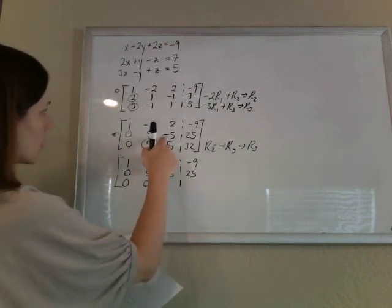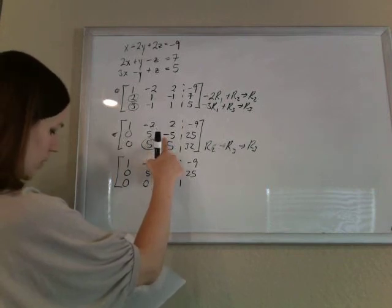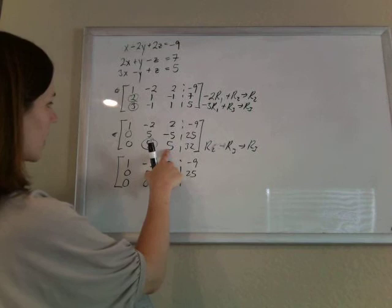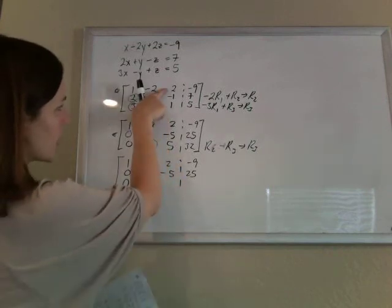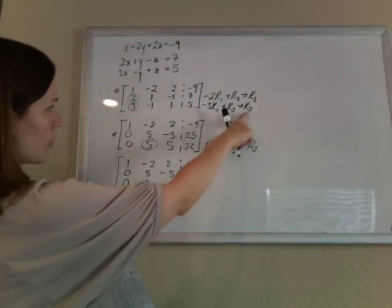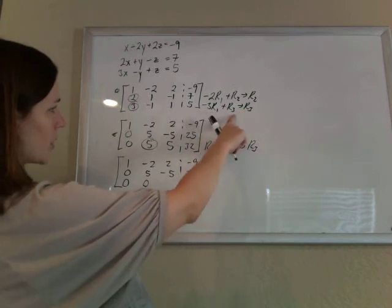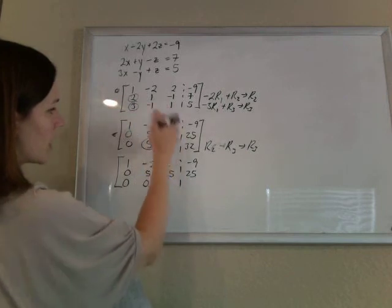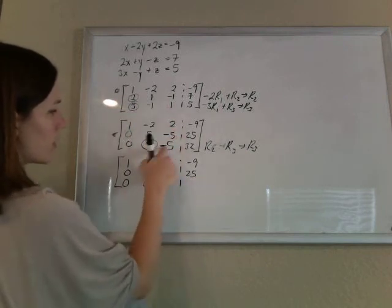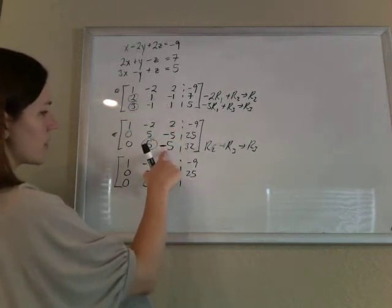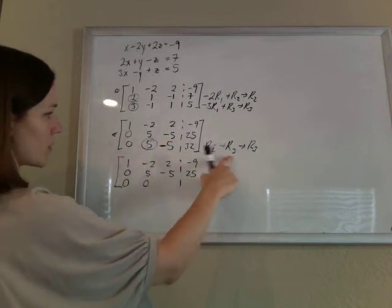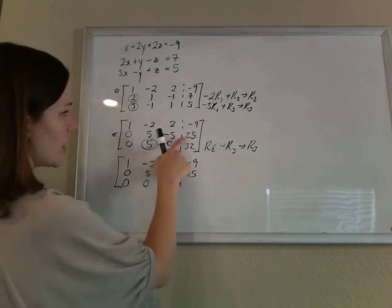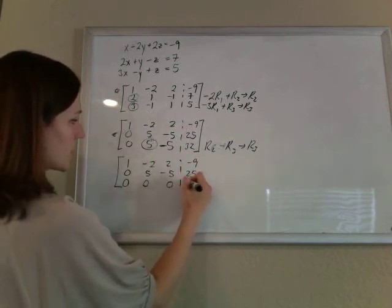This was supposed to be a negative five. I think I messed that up. So from up here, that came from row 3 was negative three times row 1 plus row 3. So negative six plus one should have been a negative five there. My apologies. So now when I do row 2 minus row 3, negative five minus the minus five is zero. And 25 minus 32 is minus seven.